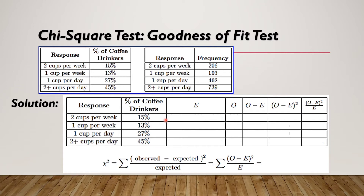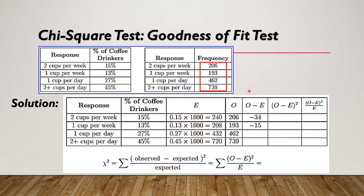Computing expected values: 0.15 × 1600 = 240; 0.13 × 1600 = 208; 0.27 × 1600 = 432; 0.45 × 1600 = 720. The observed values from the survey are 206, 193, 462, and 739. Subtracting observed minus expected: 206 − 240 = −34; 193 − 208 = −15; 462 − 432 = 30; 739 − 720 = 19.